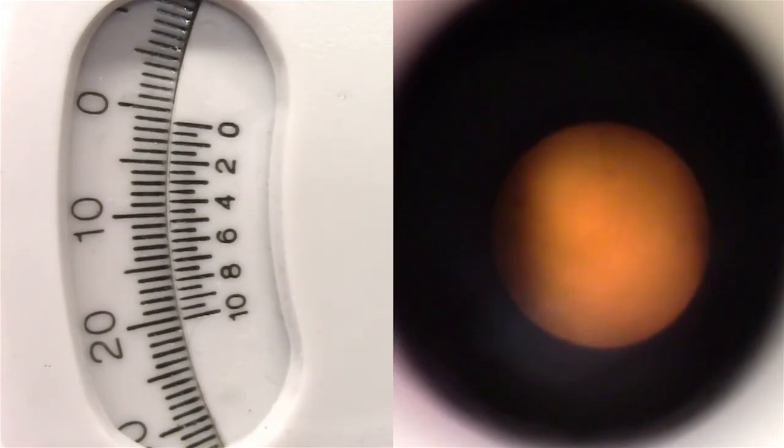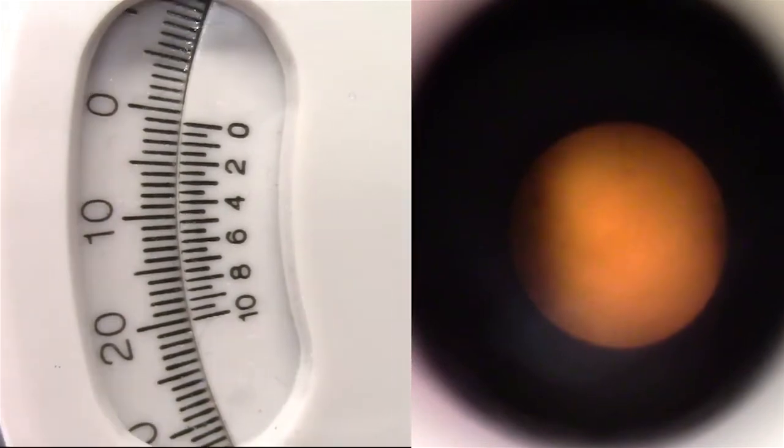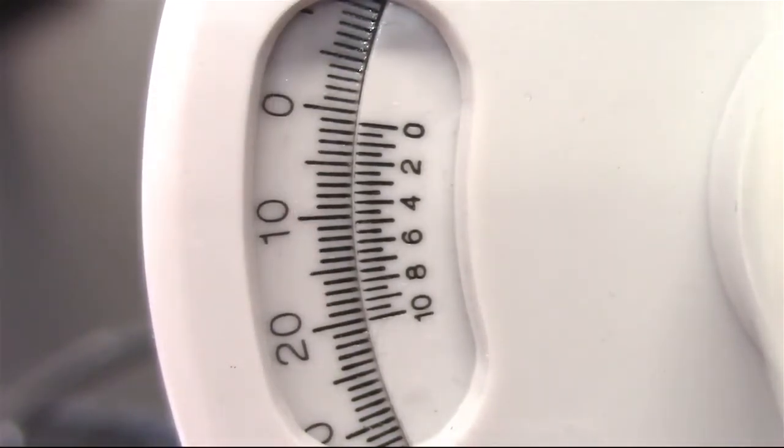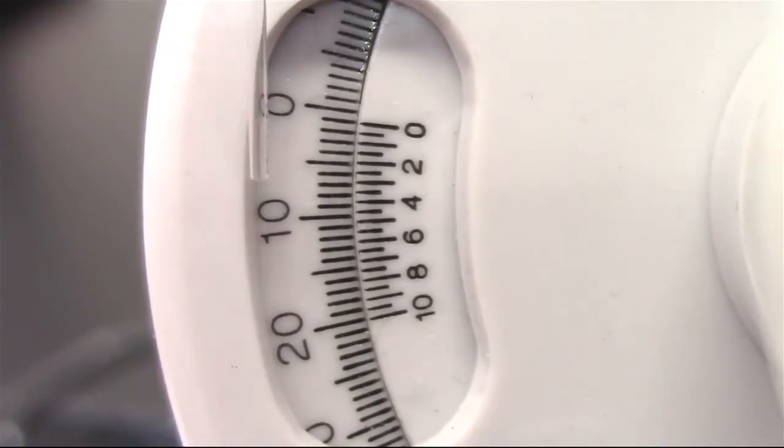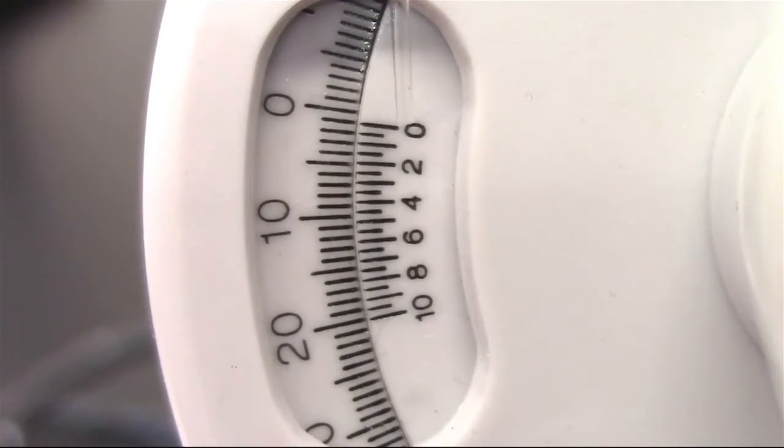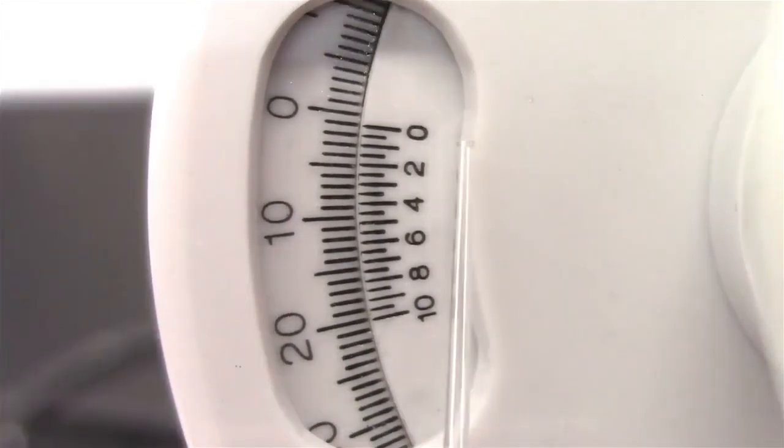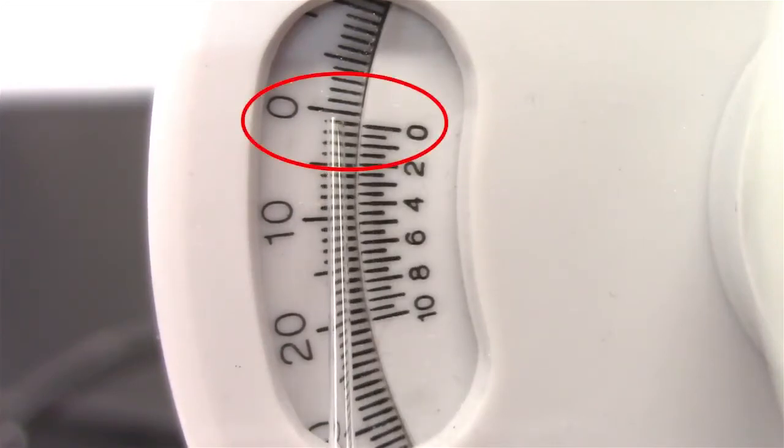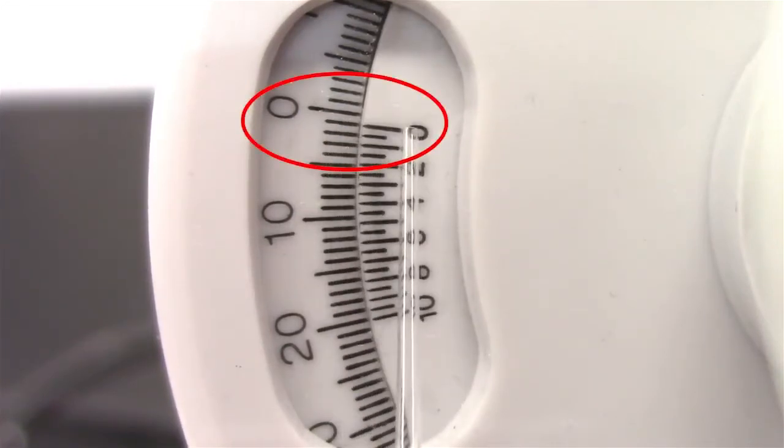Now, you can read the observed degree of rotation using the numbers on the outer dials. The outer scale is the whole number for the observed rotation reading, and the inner scale is the decimal point for the observed rotation reading. To make the reading, note where the zero on the inner scale meets up with the numbers on the outer scale.